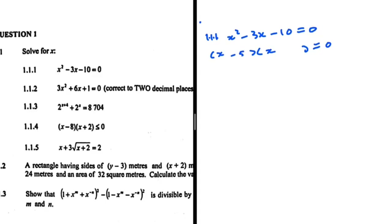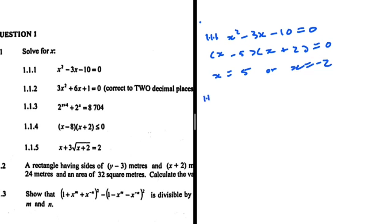So we get x equals 5 or x equals minus 2. That is 1.1.1 — pretty much straightforward. So let's take a look at 1.1.2: we have 3x squared plus 6x plus...